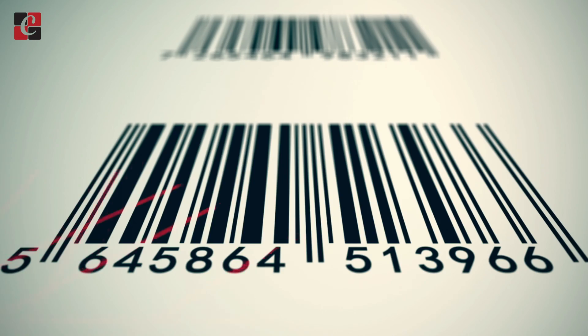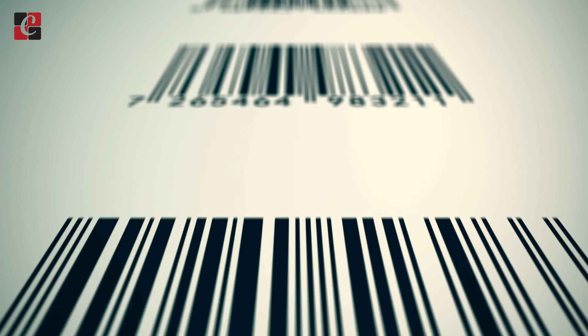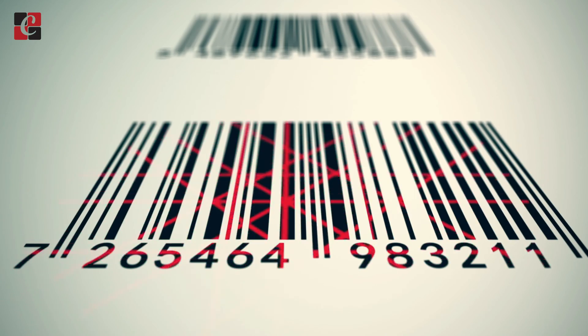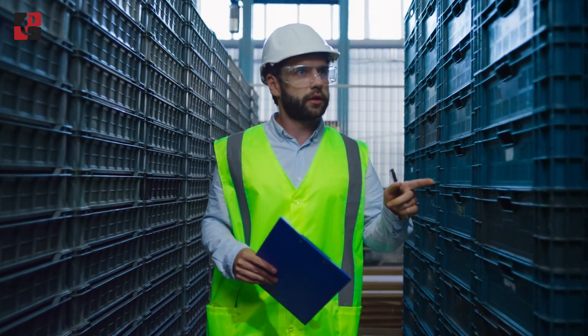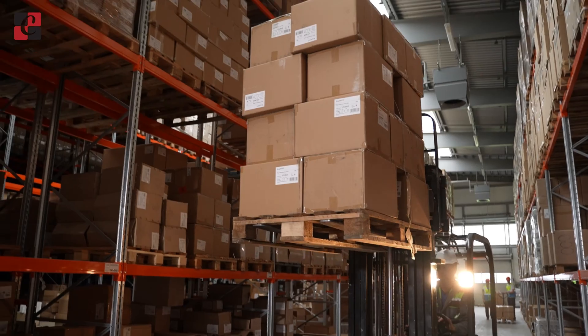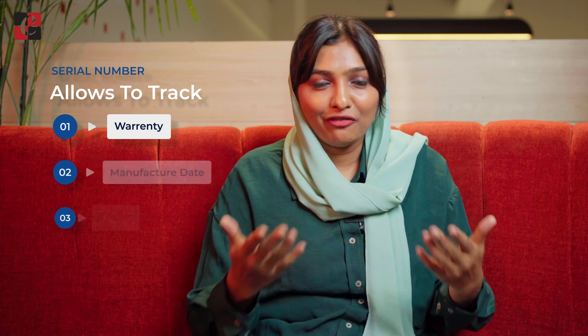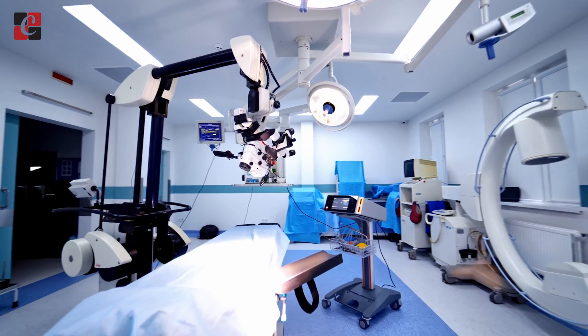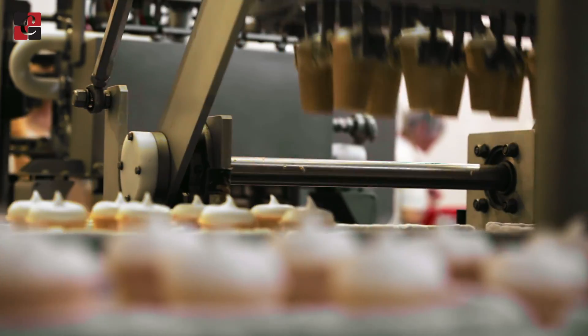A serial number is a unique identifier that is used to track the life cycle of a product. This means we can track the product movement entering into a warehouse or moving out of a warehouse or from the inventory. A serial number must be distinct and can only be used for one product, and it allows tracking the history of a product including information such as warranty, manufacturing date, repair or replacement. It can also be used for high-valued products such as medical equipment or electronic items.